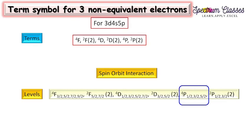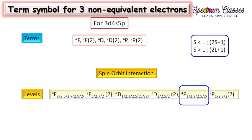The reason 4P has 3 J values rather than 4 is: when S is less than L, the number of J values is 2S+1; when S is greater than L, it is 2L+1. For 4P, S=3/2 and L=1, so S > L, giving 2L+1 = 3 J values. In total, we get 23 energy levels rather than 24 for these three non-equivalent electrons.